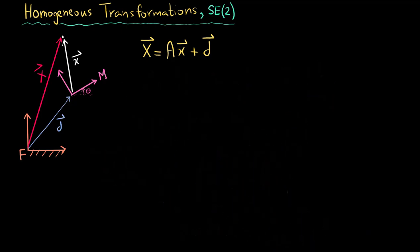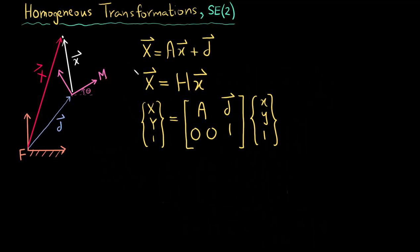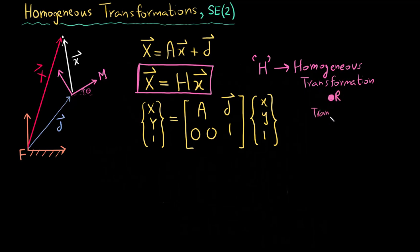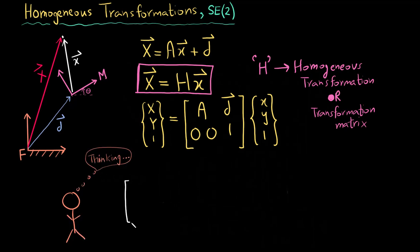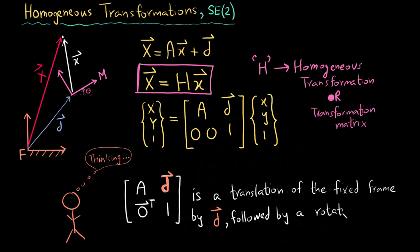The key takeaway is that you can write this equation as: big X equals H times small x, where the homogeneous transformation matrix H is a combination of the rotation matrix and the displacement vector. This boxed equation is the one you should remember. H is also simply called a transformation matrix. Think of it this way: the homogeneous transformation matrix takes the fixed frame, displaces it by vector d, and then rotates it by angle theta in the counterclockwise direction.